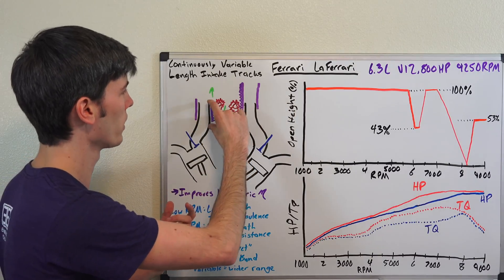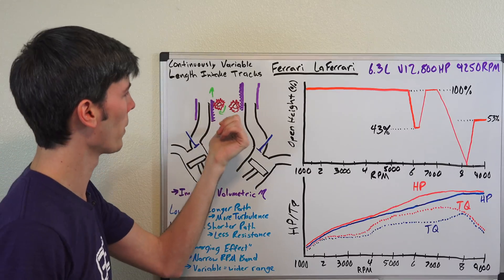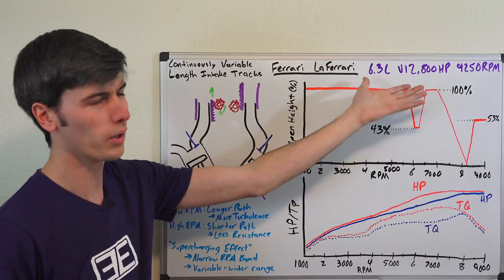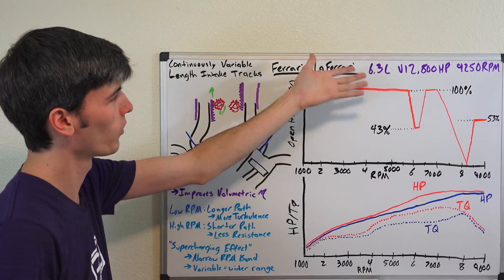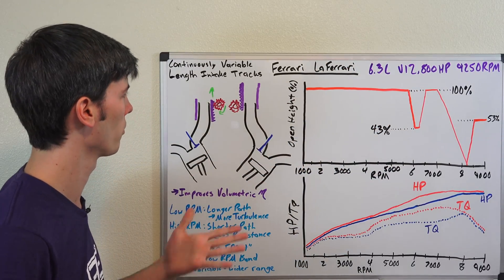So you can infinitely change it between the lowest setting and the highest setting here and I've just drawn a very simple mechanism of how this might work. You've got a V12 engine, it's actually a pretty crazy powerful 800 horsepower, revs up to 9,250 rpm, this 6.3 liter V12.